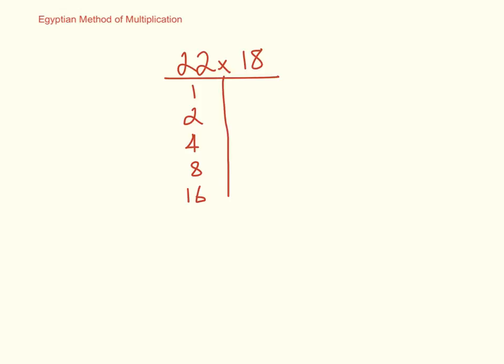So now I look at the right hand side, in this case we're multiplying by 18. I'm going to do a very similar thing, but this time I'm going to start at 18. And I'm going to double each time. 18 doubled is 36, 36 doubled is 72, 72 doubled is 144, 144 doubled is 288. So I've created a system of numbers.